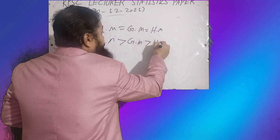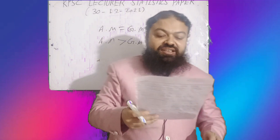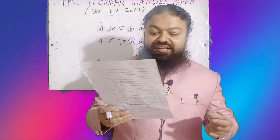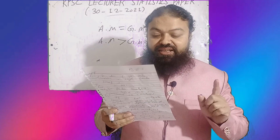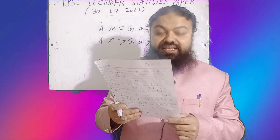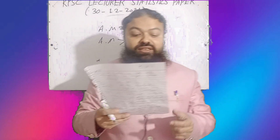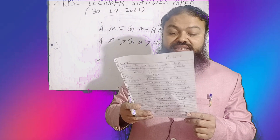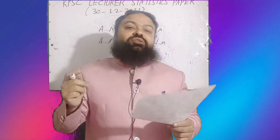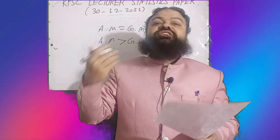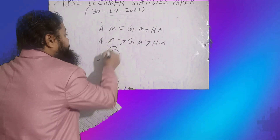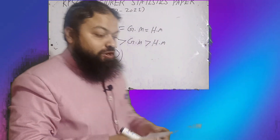The next question: the term homoscedasticity refers to equal variance of the dependent variable y for any value of x. The next question: the probability that a continuous random variable assumes a single specific value is always equal to zero. Zero is the correct option for continuous probability distributions.